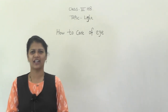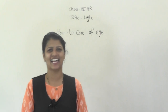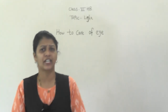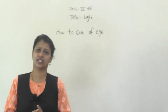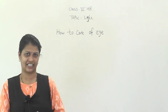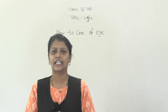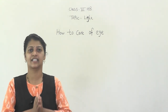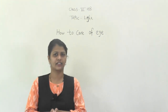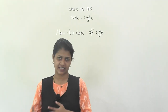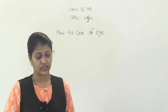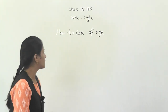Good morning, dear students. We are back with our physics video. In the last video, we discussed about defects of vision — what exactly defects of vision are, how they are caused, and how we can correct them. There are mainly two types of defects of vision: short-sightedness and far-sightedness, and how we can correct them.